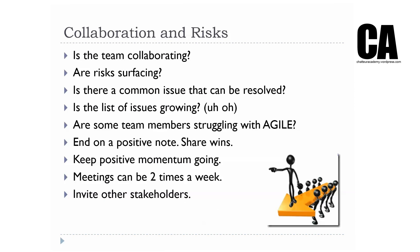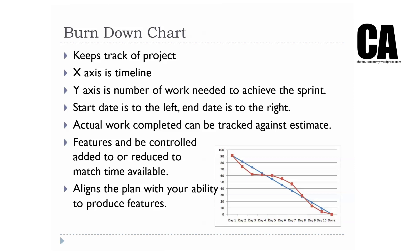Ask whether your team is collaborating, what risks are surfacing, whether common issues are being resolved, and whether your issues list is growing. At the end of each sprint, end on a positive note — if you've done something really well, celebrate and keep the positive momentum going. Your meetings can be twice a week. Invite other stakeholders to meetings — your tutor, your lecturer, or even someone from another team who might give you insights into what you could be doing better.